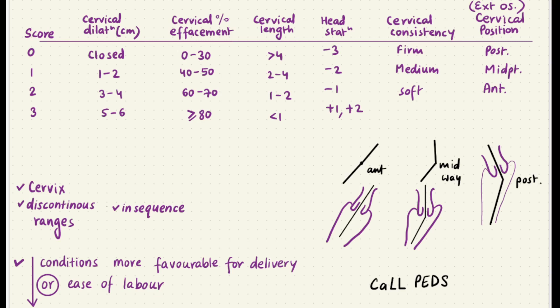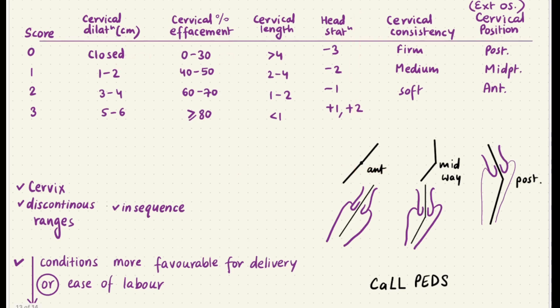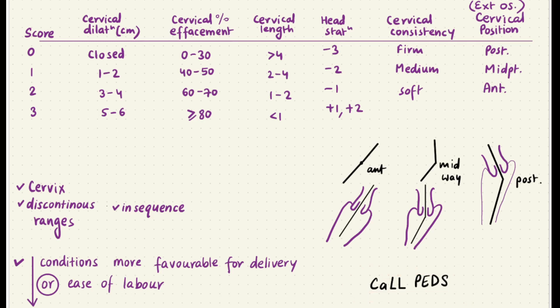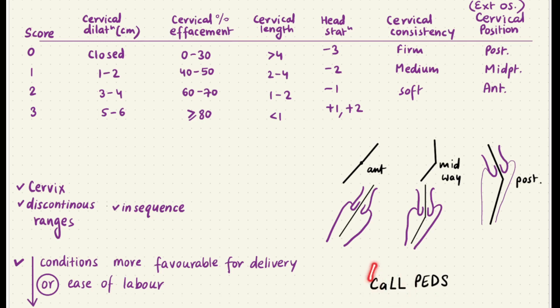Everything is related to the cervix except the head station. There is also a mnemonic for just the parameters called BEADS — I'll put the link below, it's by Medic Was Awesome. C stands for cervical consistency, L for length, P for position of the cervix, E for effacement, D for dilatation, and S for head station.